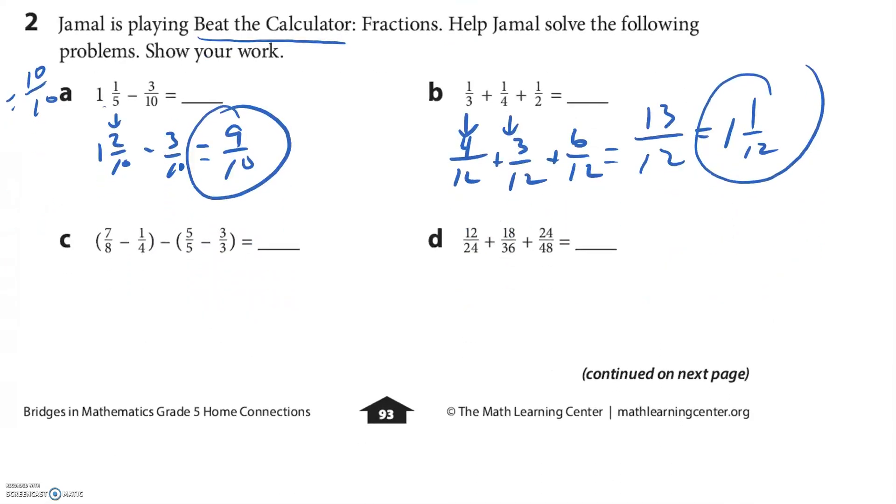All right, let's look at C. I really like this C. Look at that. That's just one minus one, which is zero, right? So now I just have seven-eighths. Instead of one-fourth, I'm going to put two-eighths. So seven-eighths minus two-eighths, I got five-eighths.